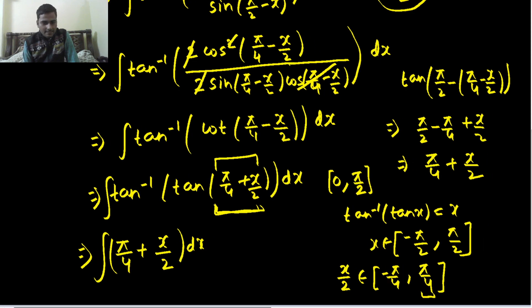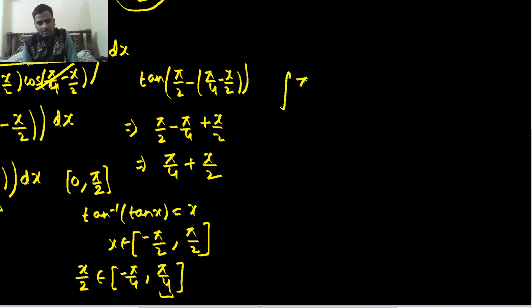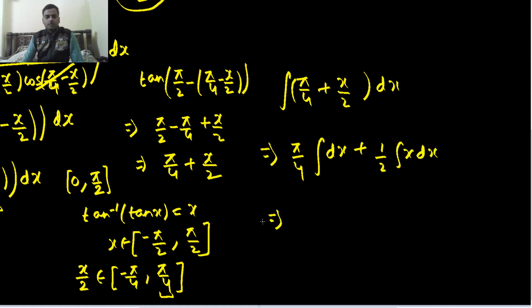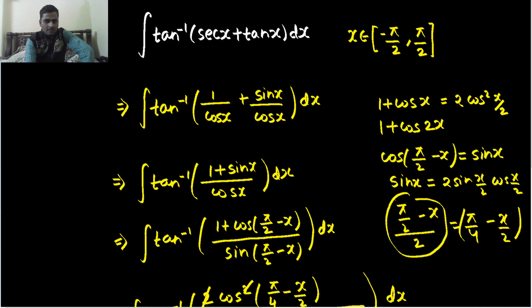So integration of π/4 is we are left with integral of π/4. This is just simple for you now. This is π/4x plus integration of x is x square by 2. So this becomes x square by 4 plus a constant c. So π/4x plus 1/4 x square plus c.